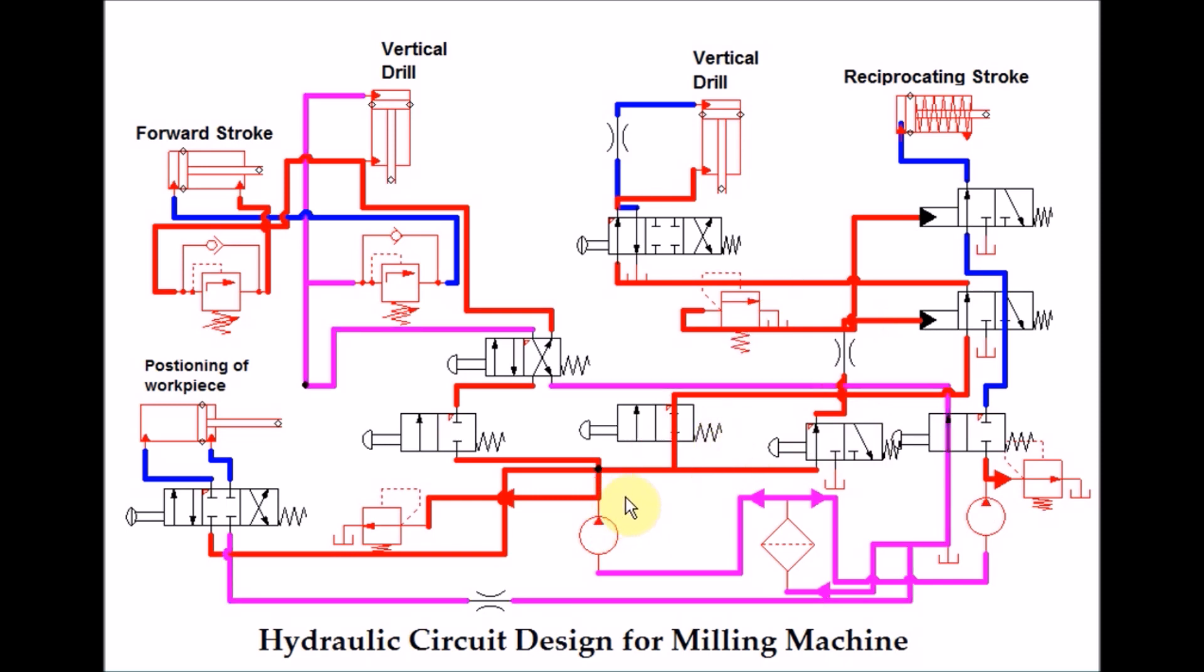So this is how our milling machine works. We have discussed two circuits about the milling machine. One is the longitudinal and vertical drill, and the second is with reciprocating strokes that we can see also in our shaper machine. Thank you for watching this video.